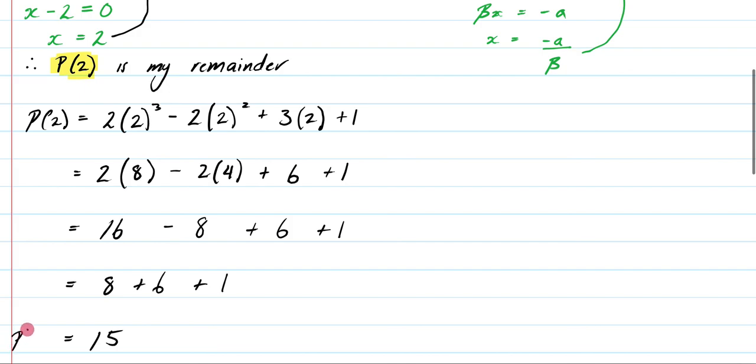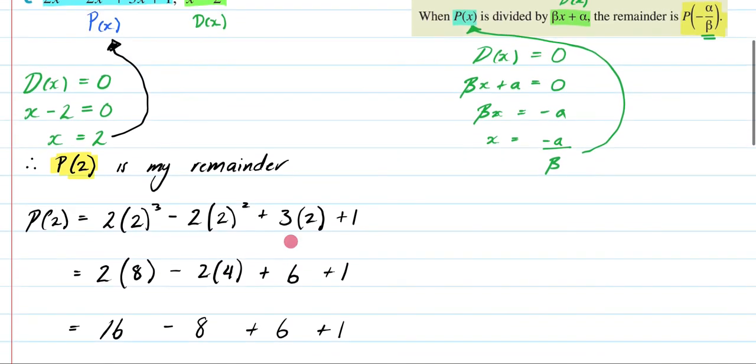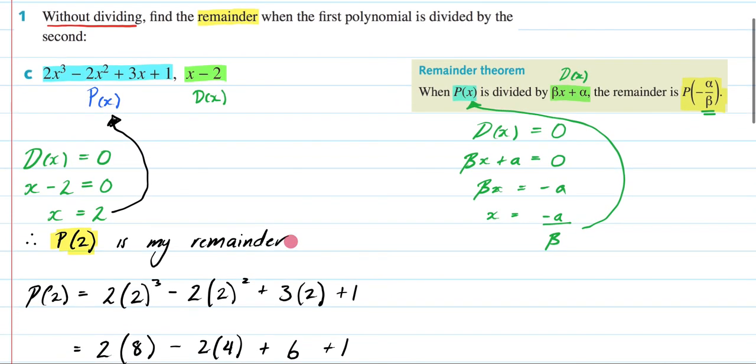So 15 right here, that is my P of 2, which is, as we know, my remainder. So this right here is going to be your answer. Your remainder is going to be 15. Hopefully, this video has been helpful to you. We've really taken our time with it. In subsequent videos, I'm going to move a lot faster, but hopefully you understand what the remainder theorem is and how to apply it.